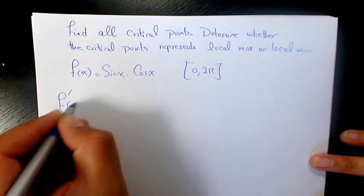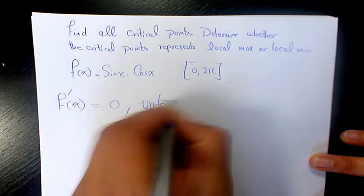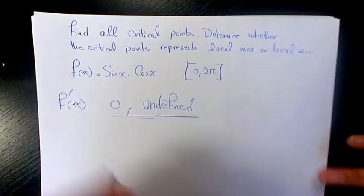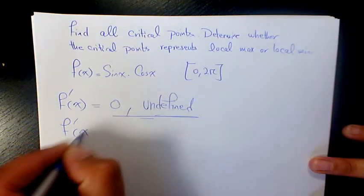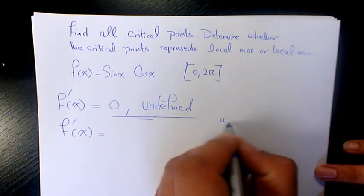First, we need to find f'(x). If f'(x) equals zero or is undefined, it means we're dealing with critical points. So to find f'(x), we need to use the product rule. The product rule is uv' = u'v + uv'.